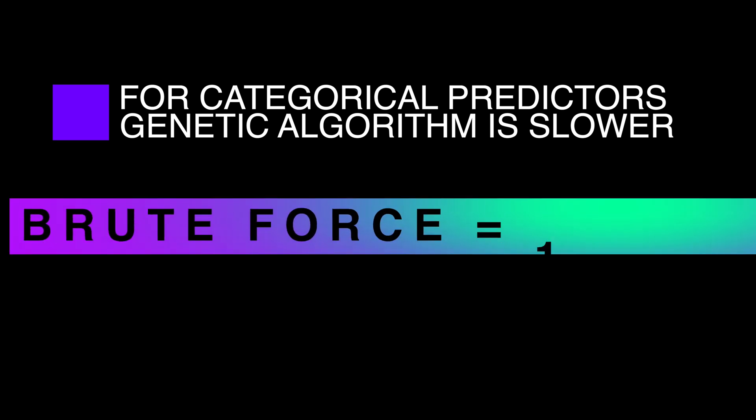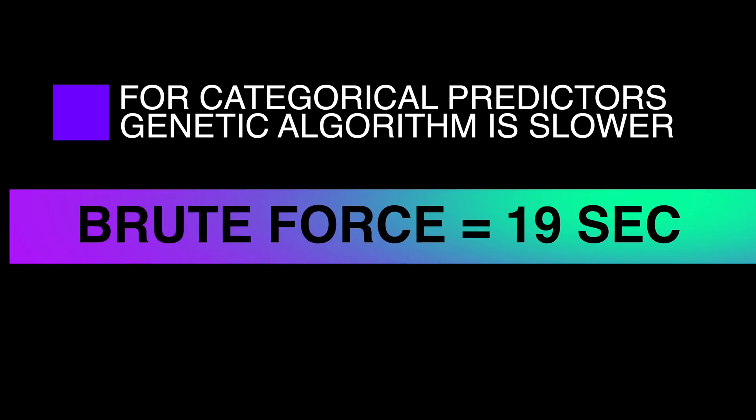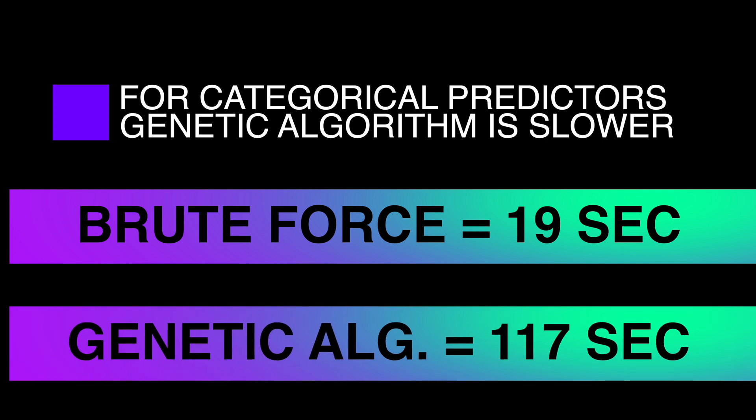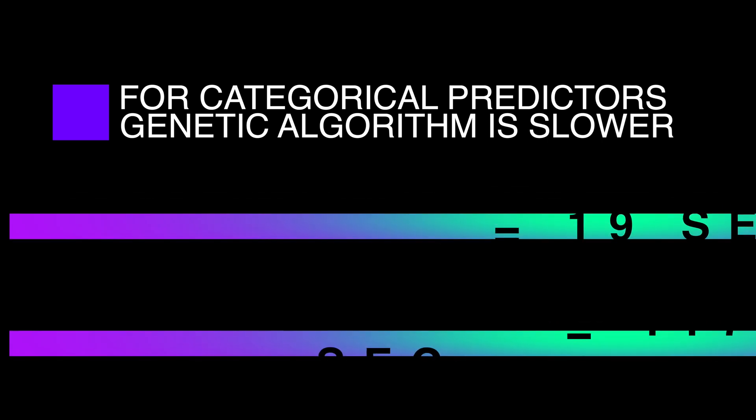For instance, our wage model, which has lots of categorical predictors, took only 19 seconds with the exhaustive screening, while needed 117 seconds till genetic algorithm converged.